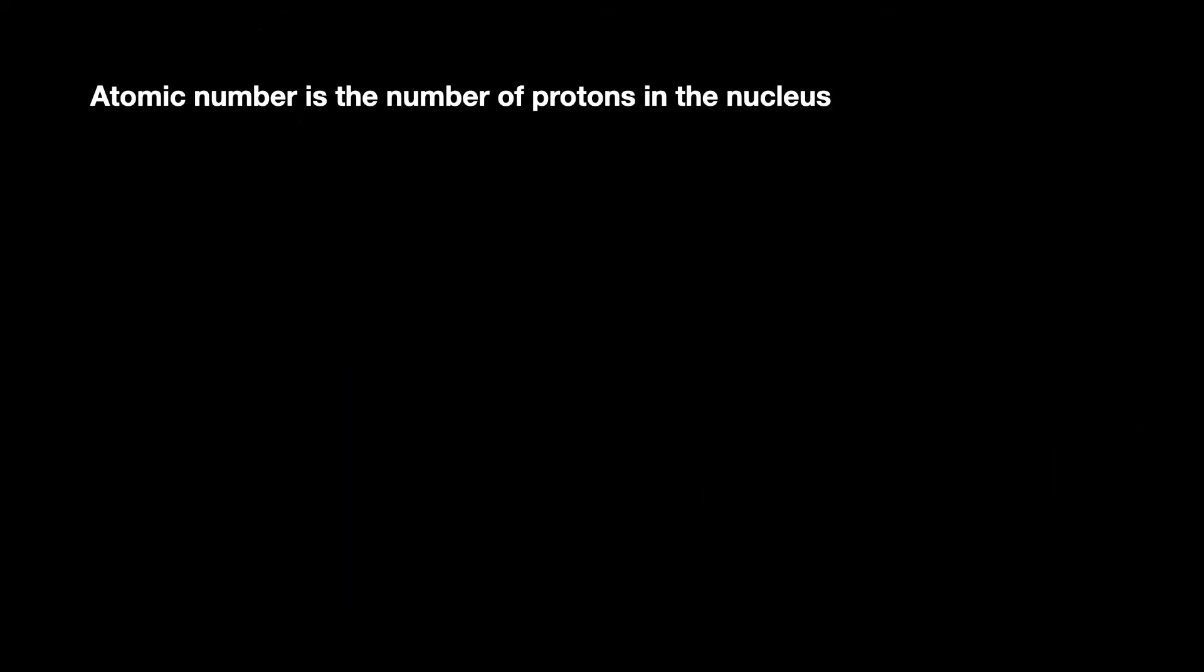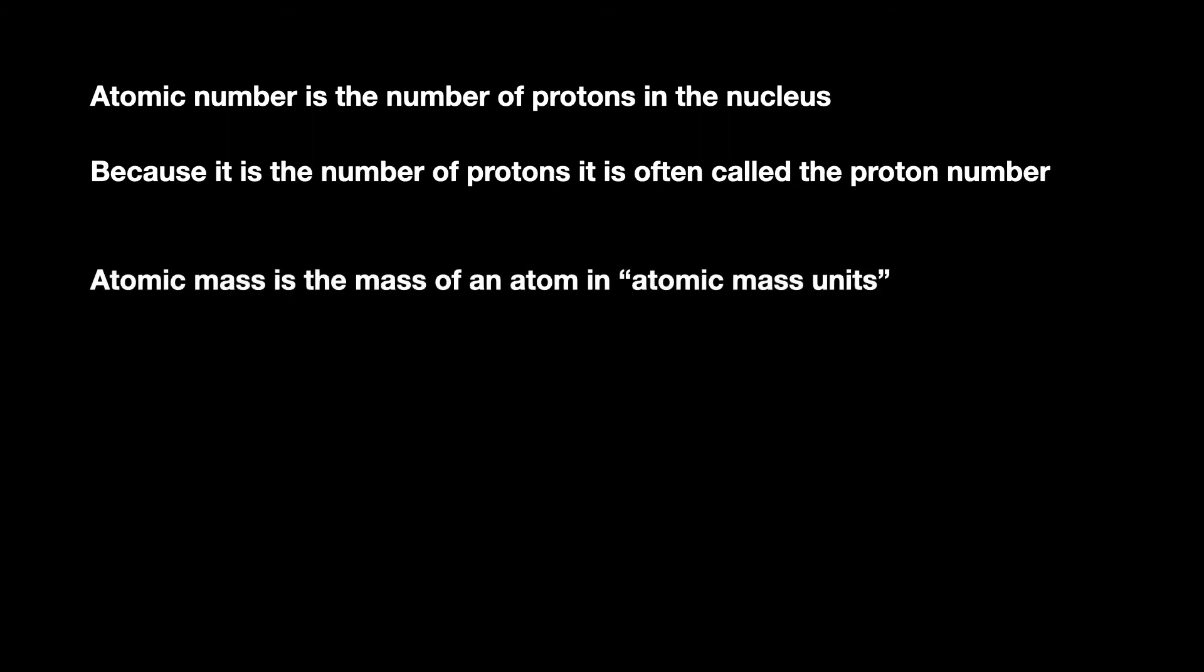So to recap, the atomic number is the number of protons in the nucleus. Because it is the number of protons, it is often called the proton number. The atomic mass is the mass of the atom in atomic mass units.